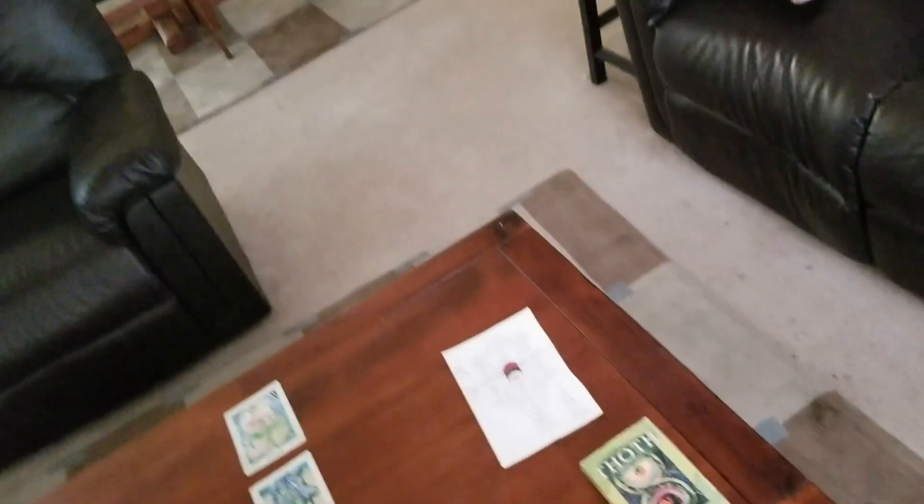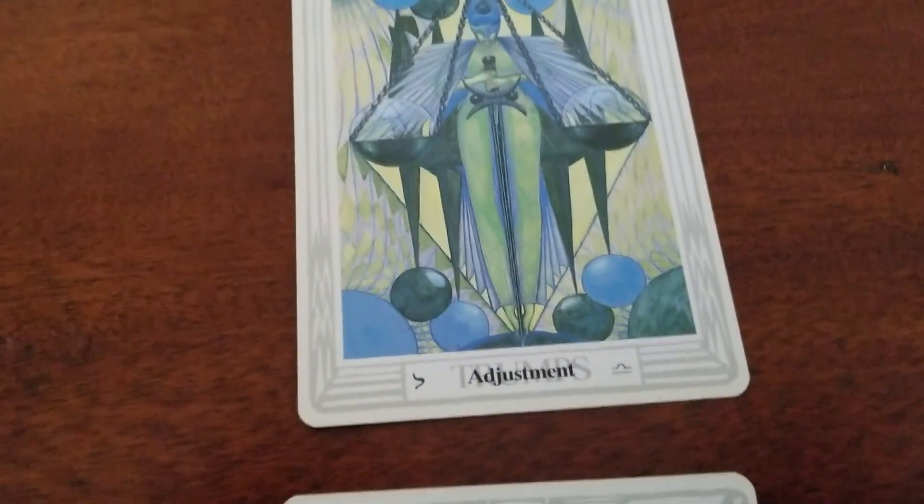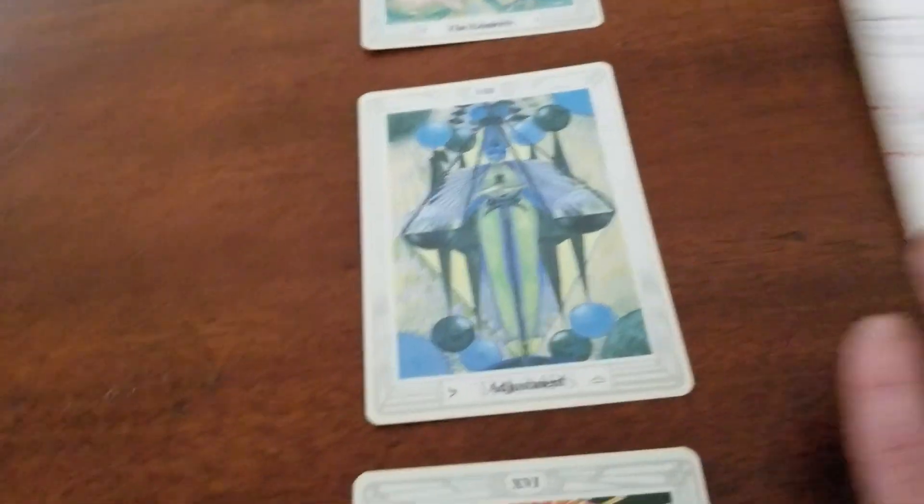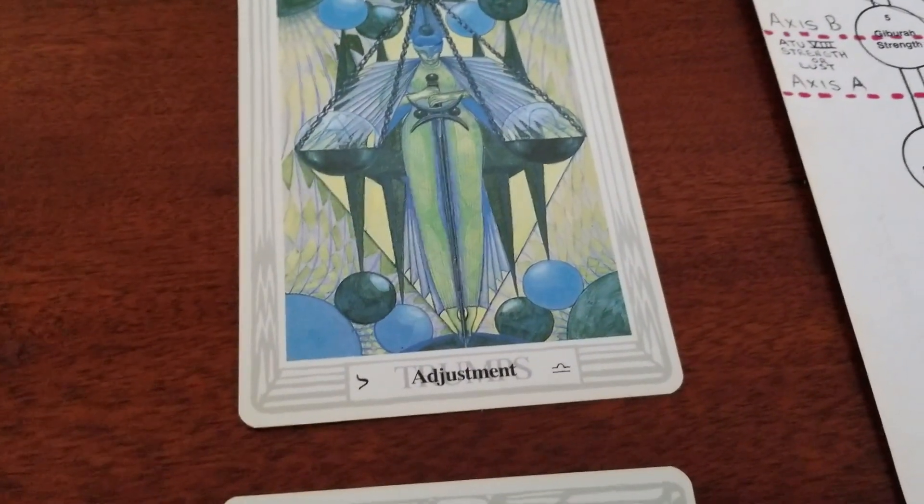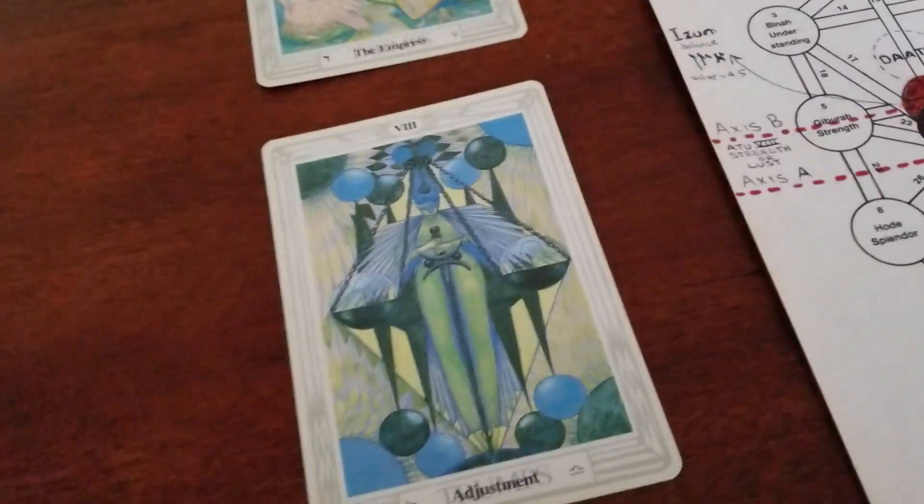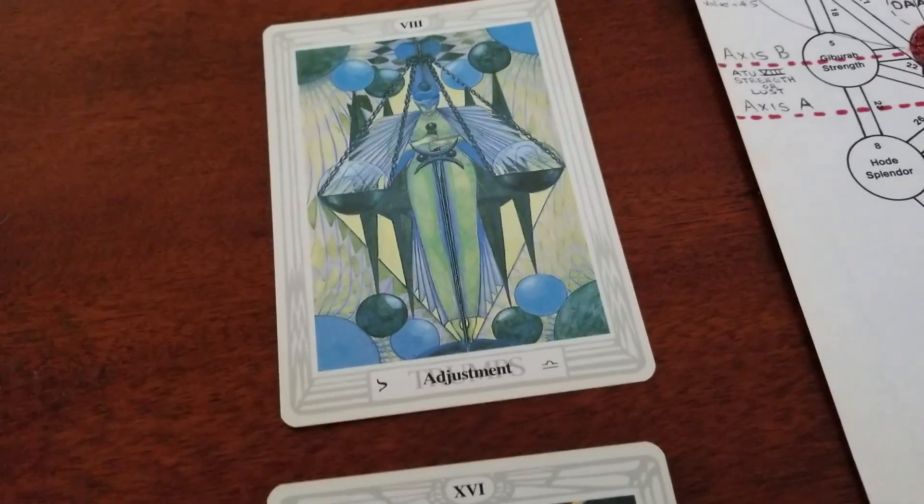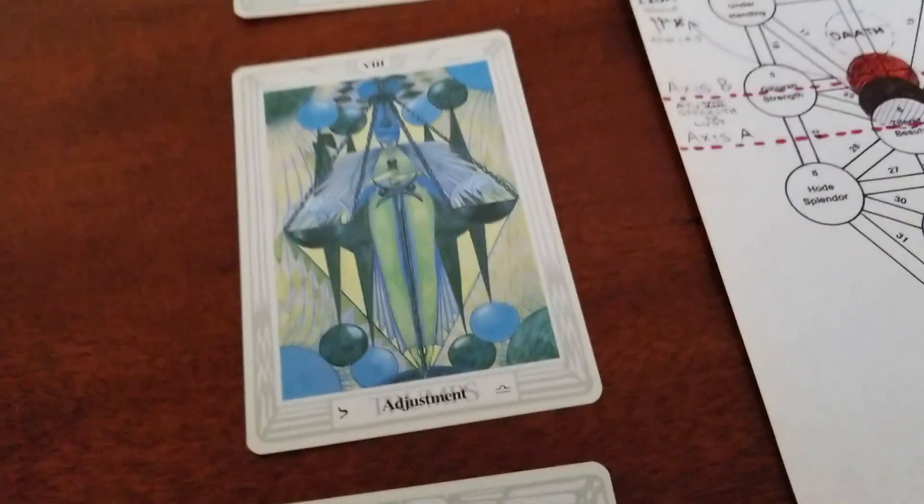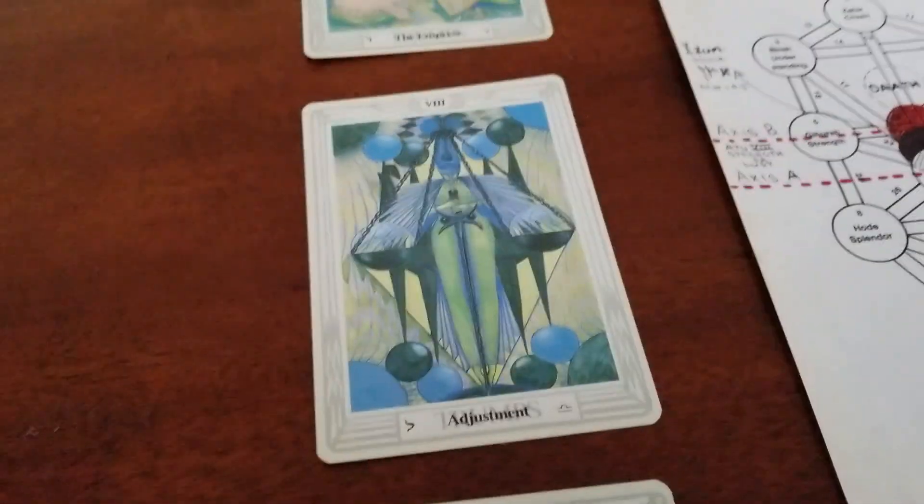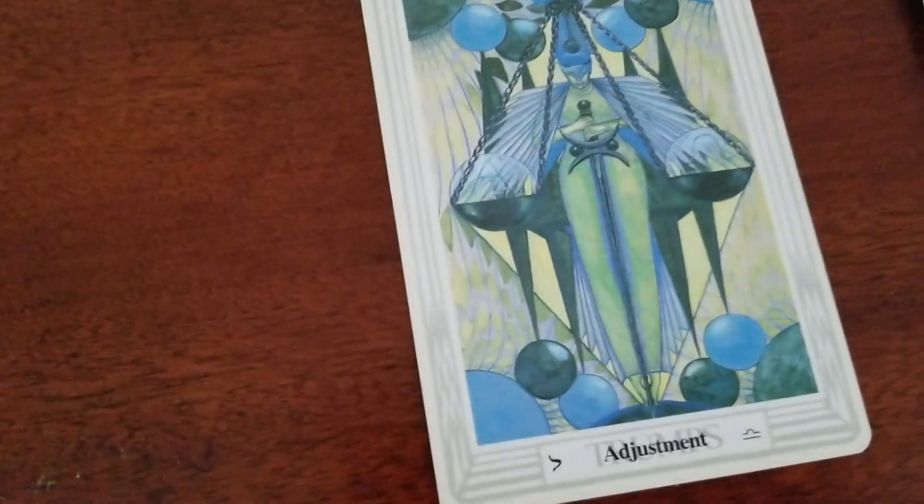Alright, what's up people. Next tarot for you, and in this video we're talking about this card here. One of the very interesting things is that this is one of, I think, four cards that Crowley renamed from the original naming. This is one of the ones that, in my opinion, makes a magical difference because the original name of the card was not Adjustment, it was Justice.